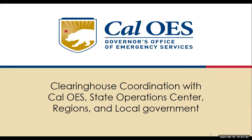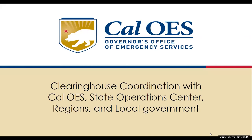Good morning. I'm happy to talk about coordination with Cal OES and the state operations center, regions, and local government. The activation process begins with the earthquake and tsunami program duty officer — we have duty officers 24/7, so there's always someone watching. We coordinate with the state warning center, which is the Cal OES lead for notification and initial reporting on events, and with the California state geologist and the Geological Survey to share interpretation, technical information, and impacts. The seismic hazards branch will assign staff to respond to the state operations center with CGS, and our information goes to the Cal OES regional operation centers.